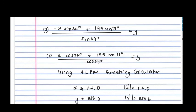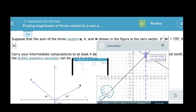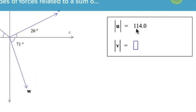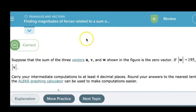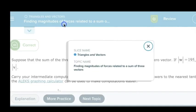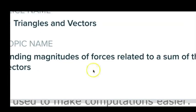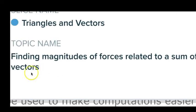So now let's go ahead and put those answers on ALEX. So 114.0 and then the magnitude of v was 213.6. We'll check our answer to verify that we're on the right track. Ooh, that was quick. And we got it correct! So I hope this movie on finding the magnitude of forces related to a sum of three vectors has been helpful for you.